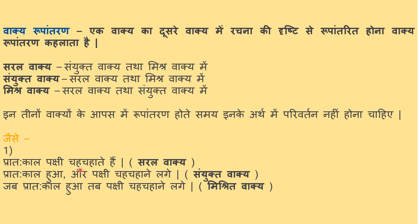For example: Pratah kaal pakshi chahi chahi chahi haate hain — this is a saril vaakya. In the morning, birds chirp. Converting to sanyukt vaakya: Pratah kaal hua, aur pakshi chahi chahi haane lage — now there are two independent sentences joined with aur, and a comma before the joining word. Converting to mishrit vaakya: Jab pratah kaal hua, tab pakshi chahi chahi haane lage — jab and tab make the sentences interdependent. In saral vaakya, there is just a plain sentence with one vidhey.